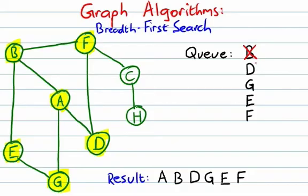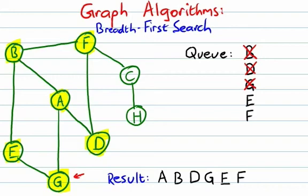Next up on the queue is D. We dequeue D and explore all vertices connected to D. We've been to both A and F, so we have no place new to go from D — we're done with D. We go back to the queue, which takes us to G. From G there's also no place new to go; we've been to both A and E, so we're done with G.